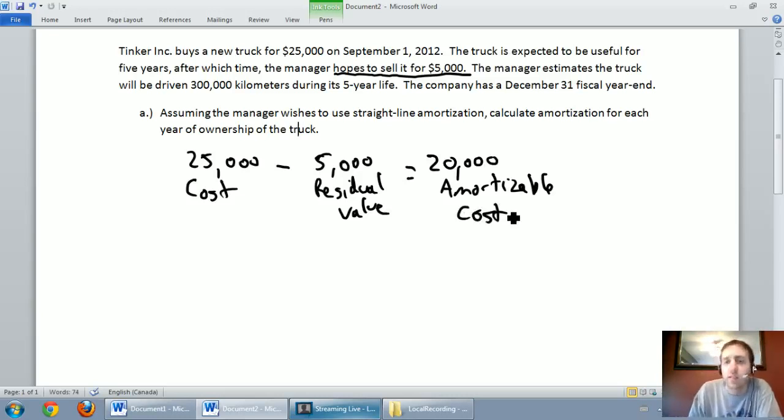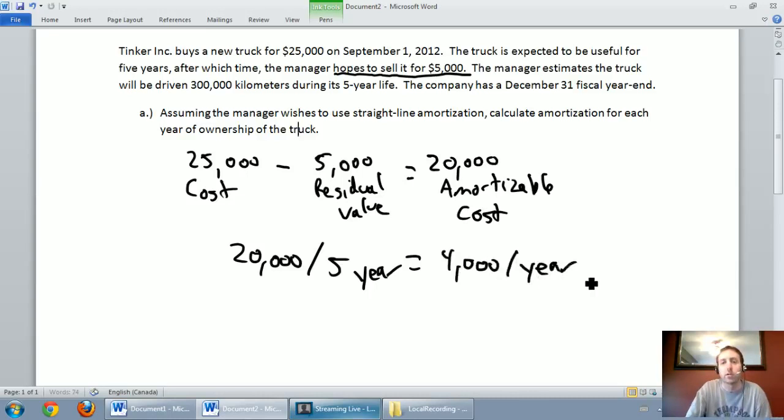The reason we teach straight line first is because it's the easiest. The math here is very straightforward. We have $20,000 that we want to amortize off our asset. We want to do it over a five-year period, so we just get an amortization rate: a yearly amortization rate of $4,000 per year.